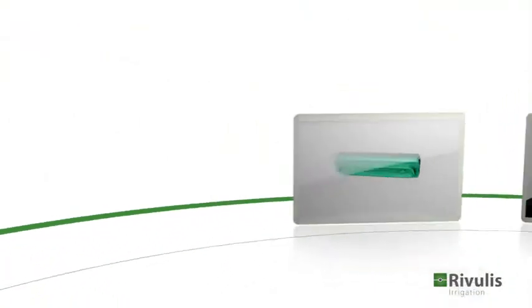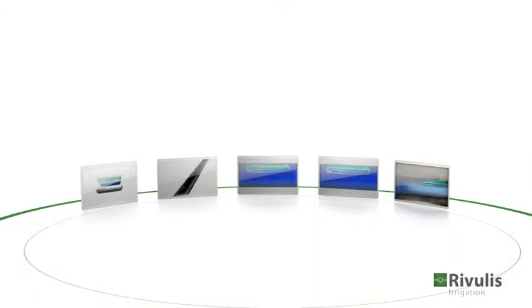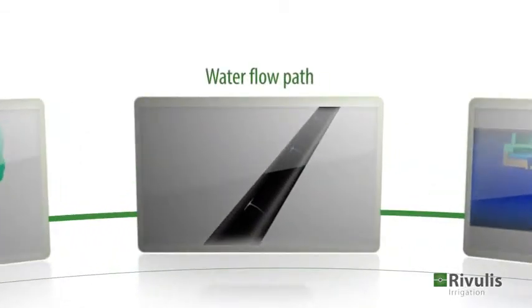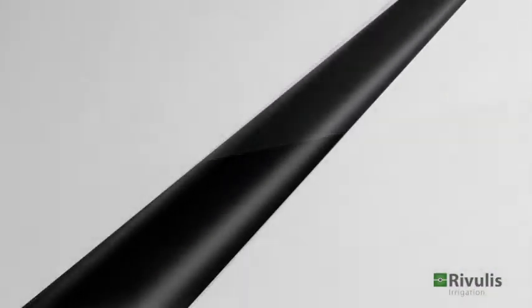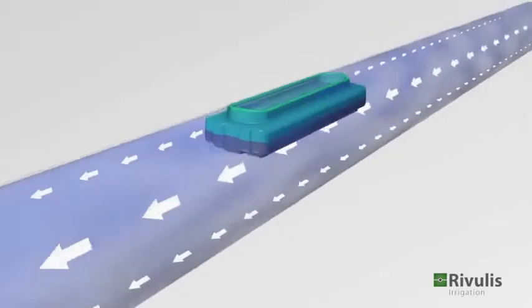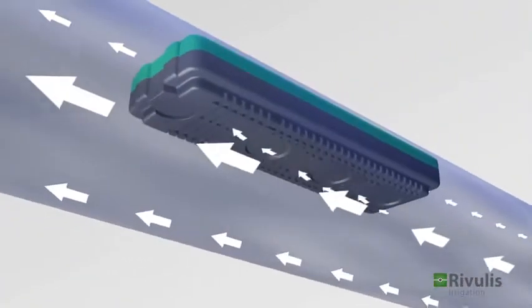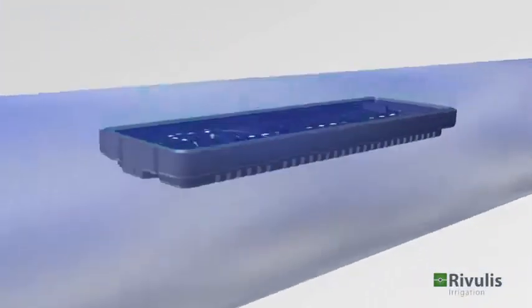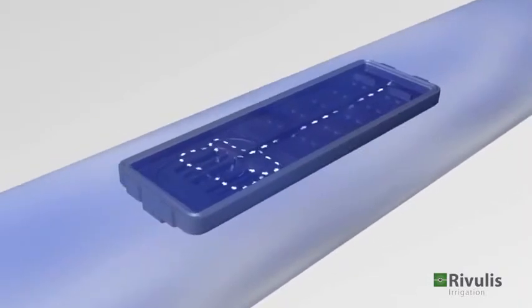Let's take a closer look at the ingenious design of the D5000 dripper. Each D5000 dripper is equipped with three parallel inlet filters, which provide a large and effective filtration surface. The filters are located far from the tube wall,